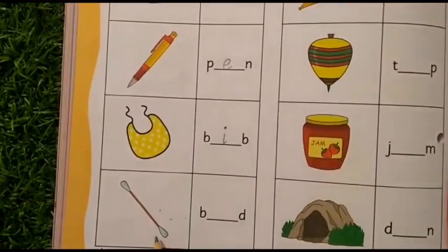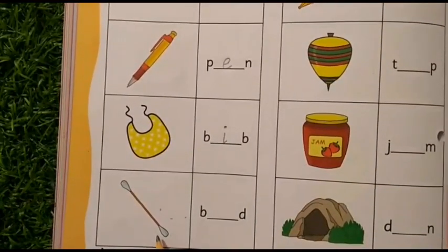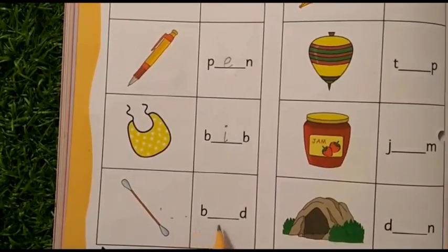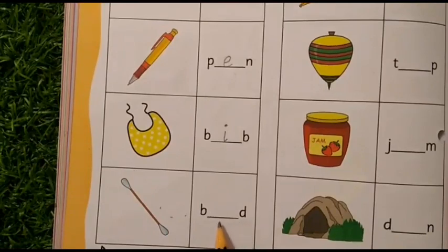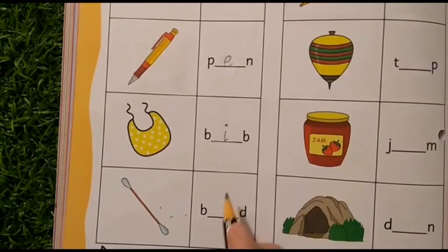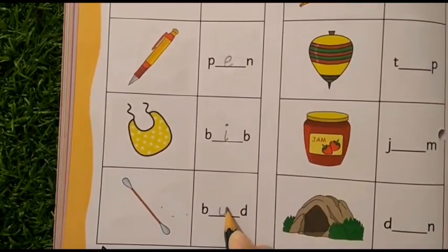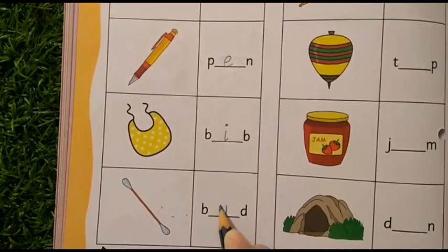Next, what is this? This is a bud. B. D. Bud. B is given. D is given. Bud. Ah. So, which letter will come here? Which letter says Ah? Which vowel? U. So, we are going to write letter U here.